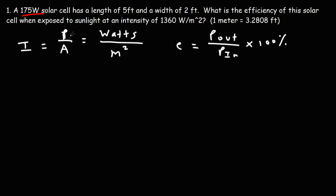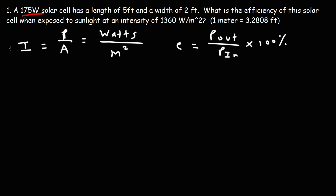In order to solve for power in the intensity equation, I'm going to multiply both sides by the area. So the input power of the sun on the solar cell is going to be equal to the intensity of sunlight times the area upon which the sunlight shines — and that's going to be the area of the solar cell.